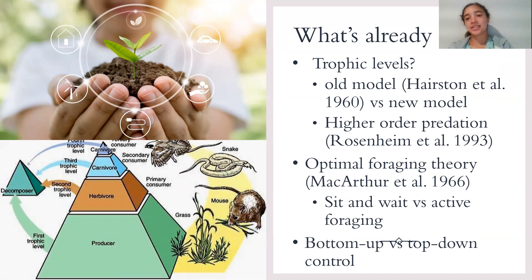Now on to what's already known. I'll start with trophic levels, which are the levels of the food web. The old model is a three level with predator, prey, and primary producer. This model does work for most ecosystems, but not all of them, which is why a new model was introduced where there is a predator above the predators, which you can see in this picture.